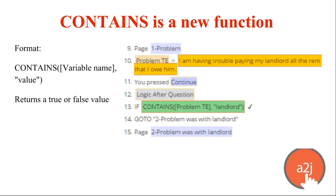There's a new 'contains' function. The format is: contains(variableName, "string you're looking for"). It tests whether anywhere within that variable contains the specified string and returns true or false. For example, if you have a question asking about someone's legal issue and they write a whole paragraph, you can search whether they mentioned words like 'abuse,' 'hit,' 'violence,' or 'landlord' — anything that might trigger a deeper line of questioning in your interview.